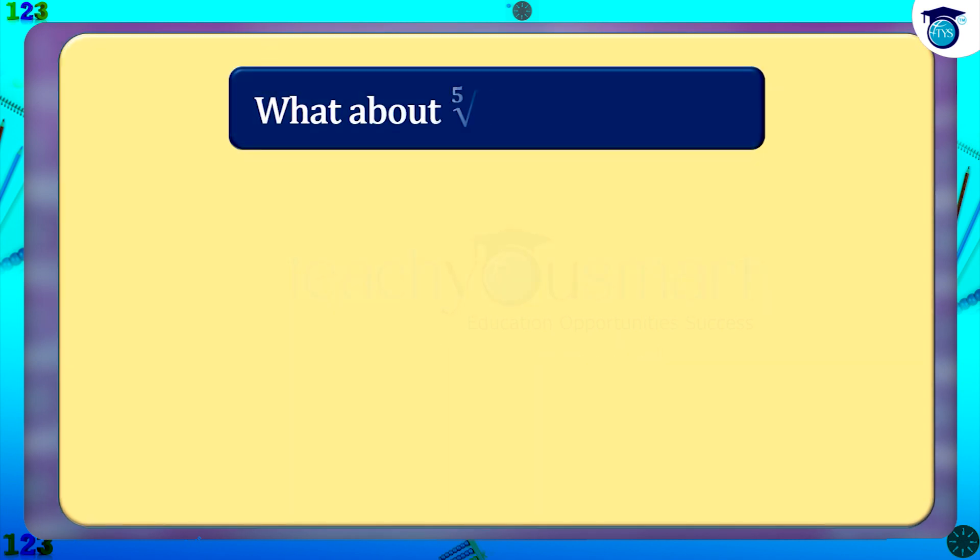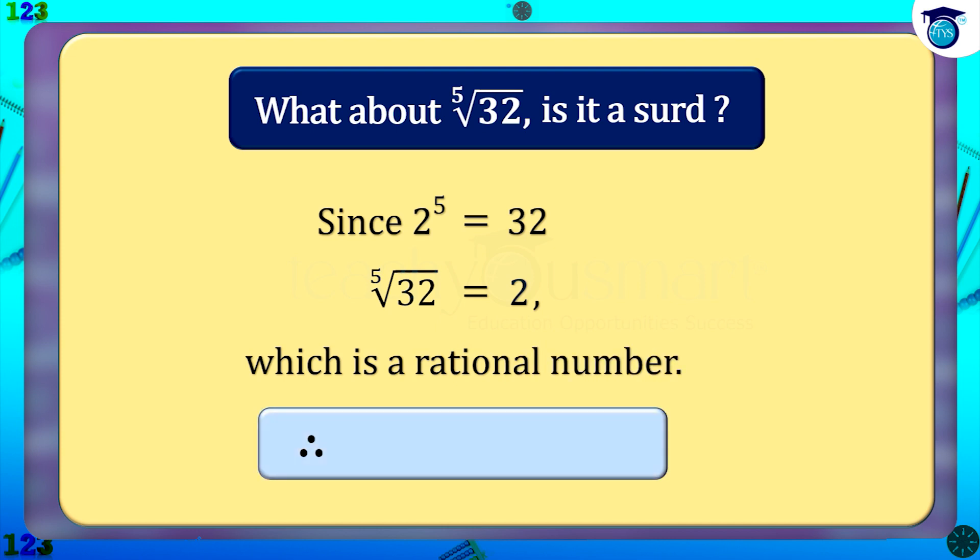But what about the fifth root of 32? Is it a surd? Since two raised to five equals thirty-two, the fifth root of thirty-two equals two, which is a rational number. Therefore, the fifth root of thirty-two is not a surd.